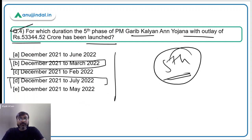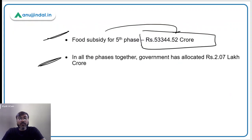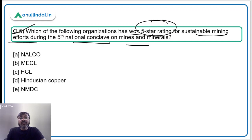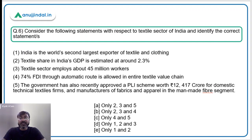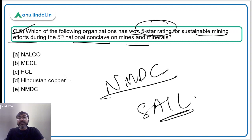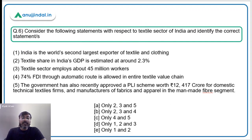Question number 5: which organizations won five-star ratings for sustainable mining efforts during the fifth National Conclave on Mines and Minerals? Two organizations won this award: NMDC (National Mineral Development Corporation) and SAIL (Steel Authority of India Limited). The correct answer is Option E — NMDC.